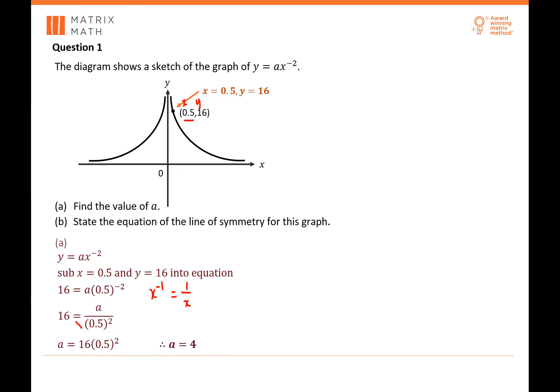Now for part B, state the equation of the line of symmetry for this graph. For this graph, the line of symmetry is exactly in the middle. So your equation is X equals 0. That is the line of symmetry.